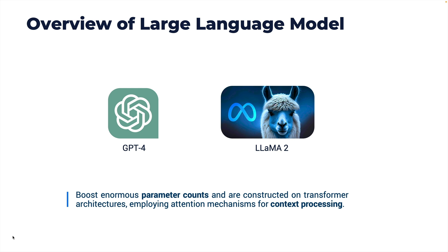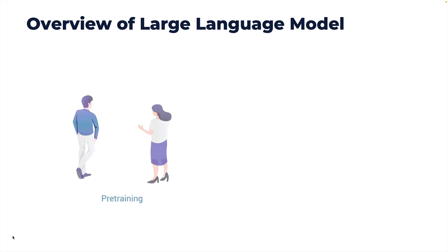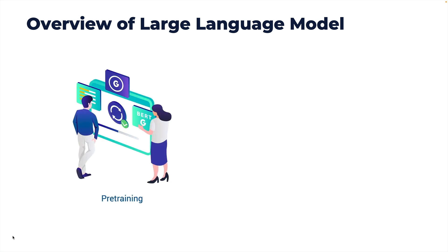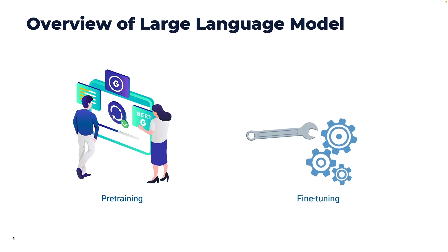The most important thing to understand is the contextual ability of LLMs to comprehend what is coming as a prompt and how to construct the response that goes back to the user or application interacting with the LLM. LLMs go through two main phases: the first is pre-training, where they are trained on vast text corpora, and the second is fine-tuning for specific tasks.